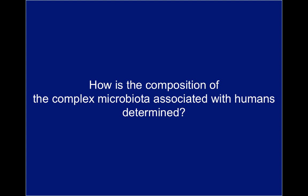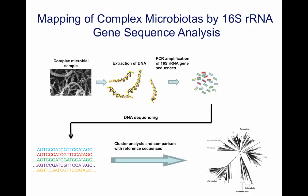The reason for the explosion of our understanding of this complex interaction with our microbiota is that gene sequencing technology has developed and become an easy method to use in laboratories around the world. Let me show you how you can determine the composition of a complex microbiota, such as we find on our surfaces in the upper respiratory tract, in the gut, or on other surfaces. The same technique is also applied in studies of environmental samples.